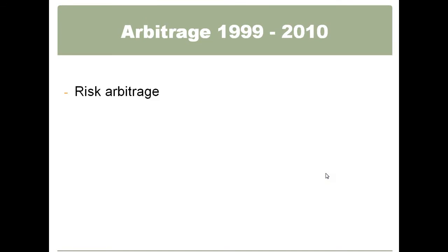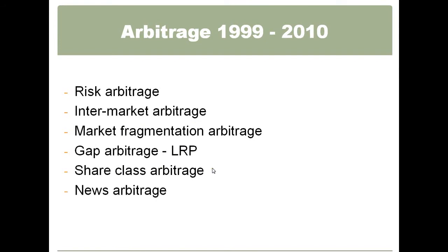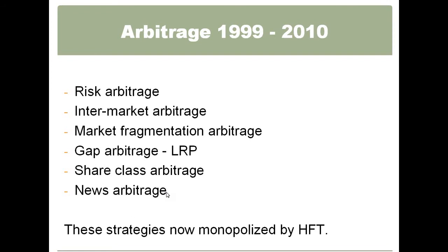Arbitrage — a lot of high-frequency traders do a lot of different arbitrage. We used to specialize in all this stuff: risk/merger arbitrage, intermarket arbitrage with Canada stocks on the Toronto Stock Exchange versus New York stocks, market fragmentation arbitrage — basically price mispricings on different exchanges — gap arbitrage involving liquidity replenishment points, share class arbitrage with different classes of securities that are actually the same stock, and news arbitrage. For the most part, all this stuff they do keeps the market more efficient. I would label this as the good high-frequency trading — the stuff that actually helps create more efficient pricing. Where human beings used to do a lot of this stuff, these strategies are now monopolized by high-frequency traders. They're just too quick.